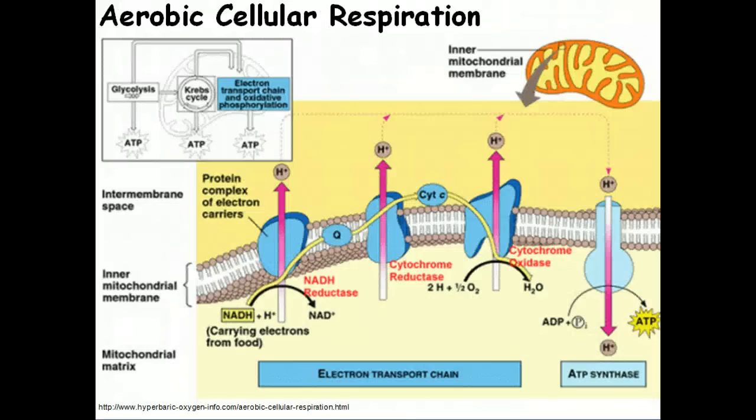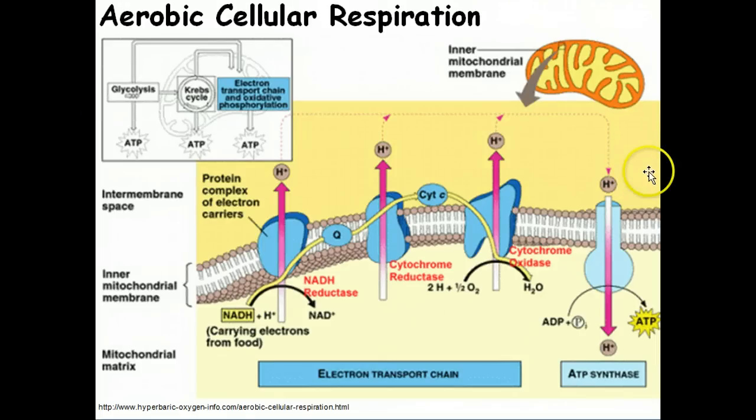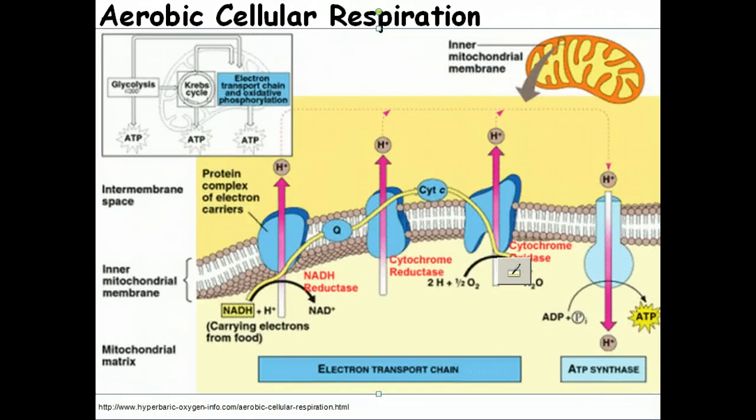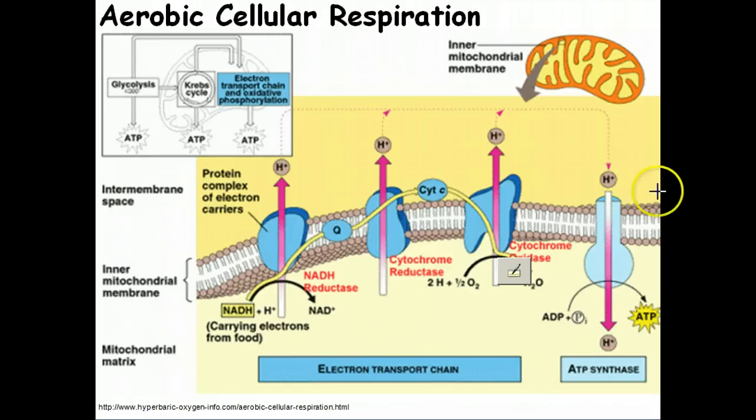This slide shows a membrane, and in particular, it's the inner membrane of the mitochondria. So this is a eukaryotic cell. If this was a prokaryotic cell, such as an archaea or bacteria, this membrane would actually be the cell membrane.